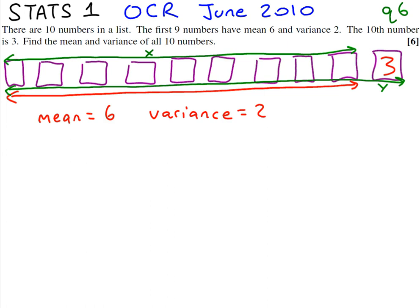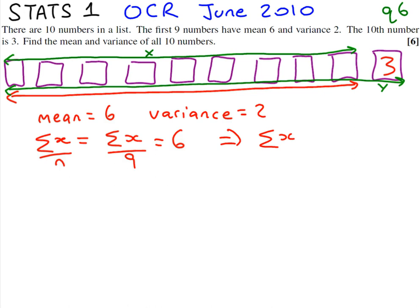The mean of x is sigma x over n, and it gives us 6. Now, we don't know what those mystery numbers add up to, but we know there are 9 of them and the answer is 6. So we can derive that the sum of those 9 numbers is 9 times 6, which is 54.